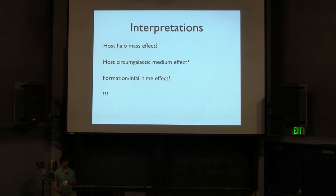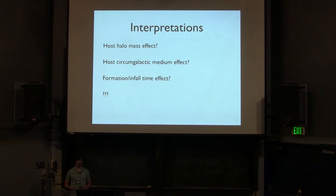So other possible interpretations is that this is an infall time thing. Quenched objects have been orbiting for longer. Or perhaps it's a formation time thing. Parts of the universe that had progenitors of passive hosts and passive satellites formed their stars earlier and got quenched earlier. And so I'll leave my conclusions up there. And I will also mention that we have other results. We have a paper in the works discussing other effects, specifically stellar mass effects. So if that's of interest to you, please talk to me. And thank you very much.